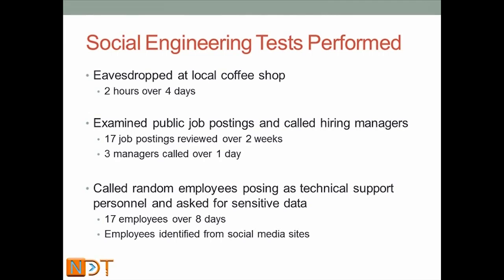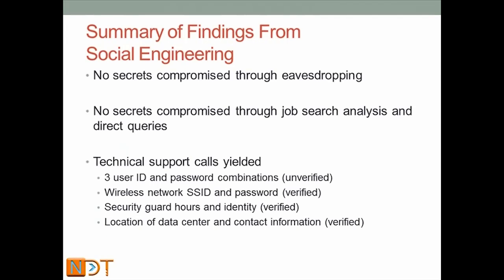This gives me the tests, allows me to explain what I did, and then the summary of findings is next. The summary of findings is again balanced — both positive and negative. For example: I found no secrets by eavesdropping — I went to the coffee shop and spent a lot of my own money on lattes and got nothing. They like hearing that because it relates to them, puts them at ease, and shows their people are doing a good job. Also, no job search analysis results yielded secrets about new projects or undisclosed information.